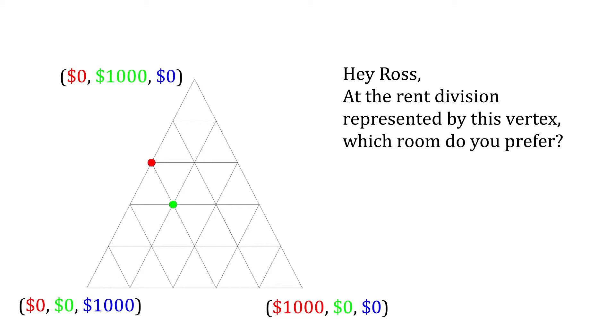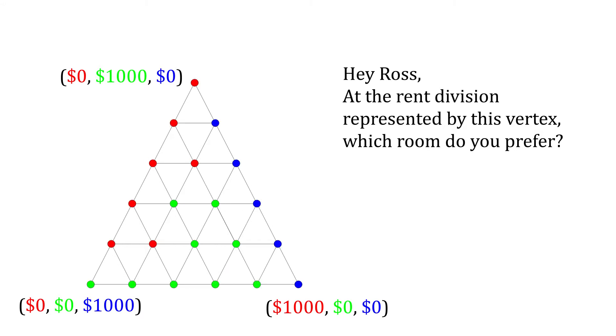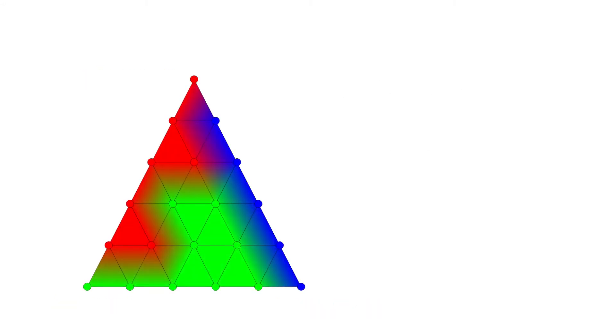Here, the green room is pricier, but he still picks it. Indicate his preference at each vertex, and then fill in each small triangle with a color gradient. The colors, and blends of colors, indicate his varying preferences.